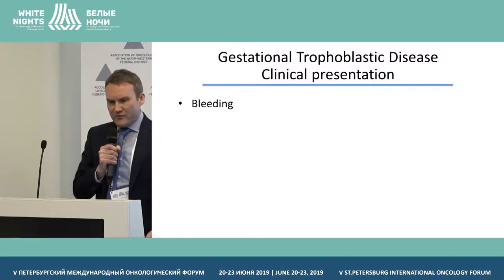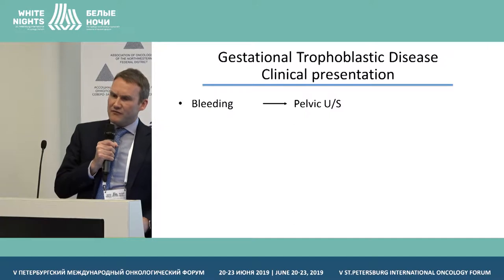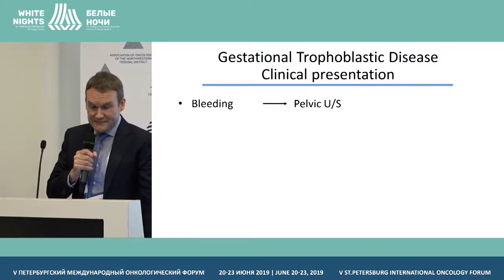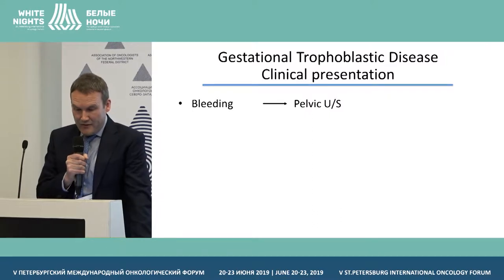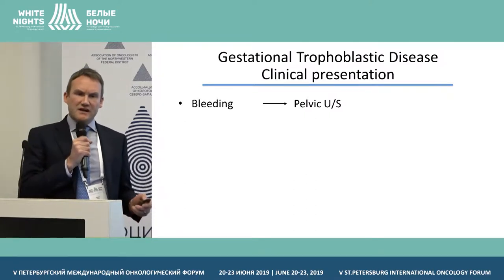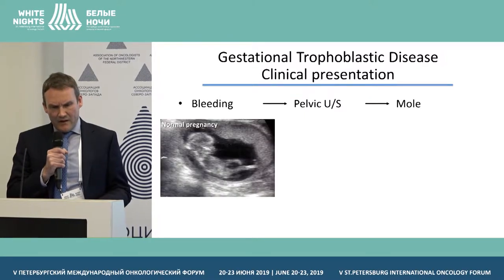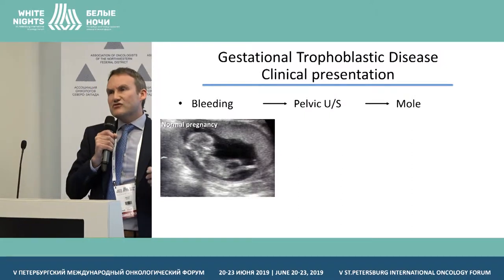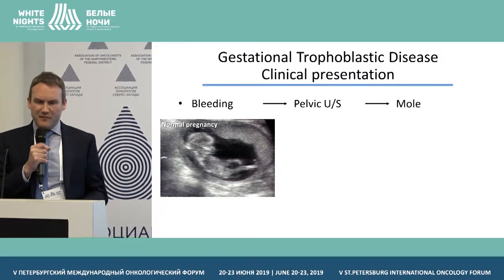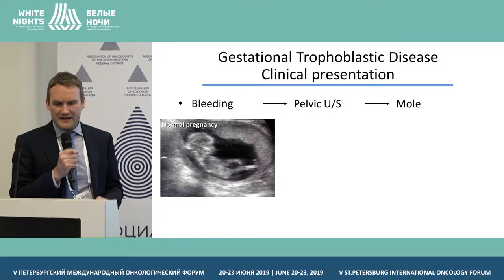Complete moles normally present in early pregnancy with vaginal bleeding. Previously reported symptoms of anemia, uterine enlargement, hyperthyroidism, and preeclampsia are rarely reported now, because ultrasound is used much earlier and these patients are diagnosed in the first trimester rather than in the late second trimester. A hydatiform mole is a trophoblastic lesion characterized by vacuolar swelling of the chorionic villi and trophoblastic proliferation, and is classified as partial mole or complete mole based on histological classification and karyotype.